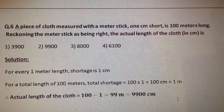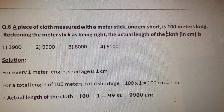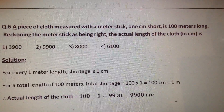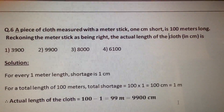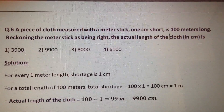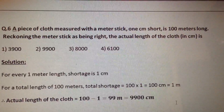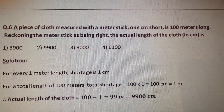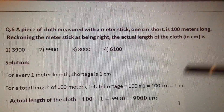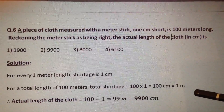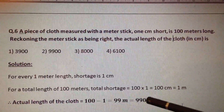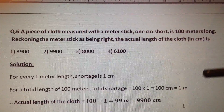Next question. A piece of cloth measured with a meter stick 1 centimeter short is 100 meters long. Regarding the meter stick as being right, the actual length of cloth in centimeters is? For every 1 meter, the length shortage is 1 centimeter, meaning the stick is short by 1 centimeter. For a total length of 100 meters, the total shortage is equal to 100 into 1, that is 100 centimeters, which is 1 meter. So the answer is option number 2.